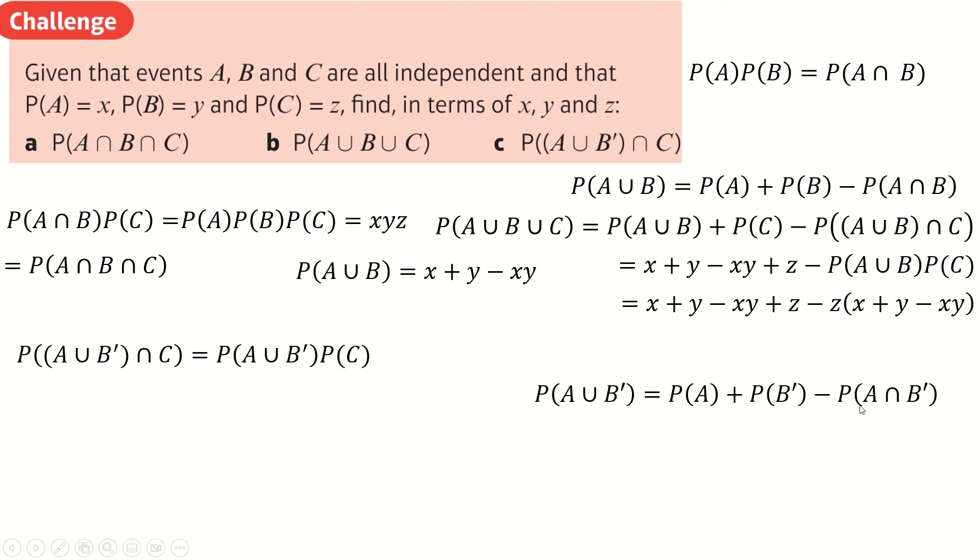This, we could use this rule for if we wanted to. Just replacing B with B dashed. And we get this. And now, of course, because of independence, this is just P of A times P of B dashed.